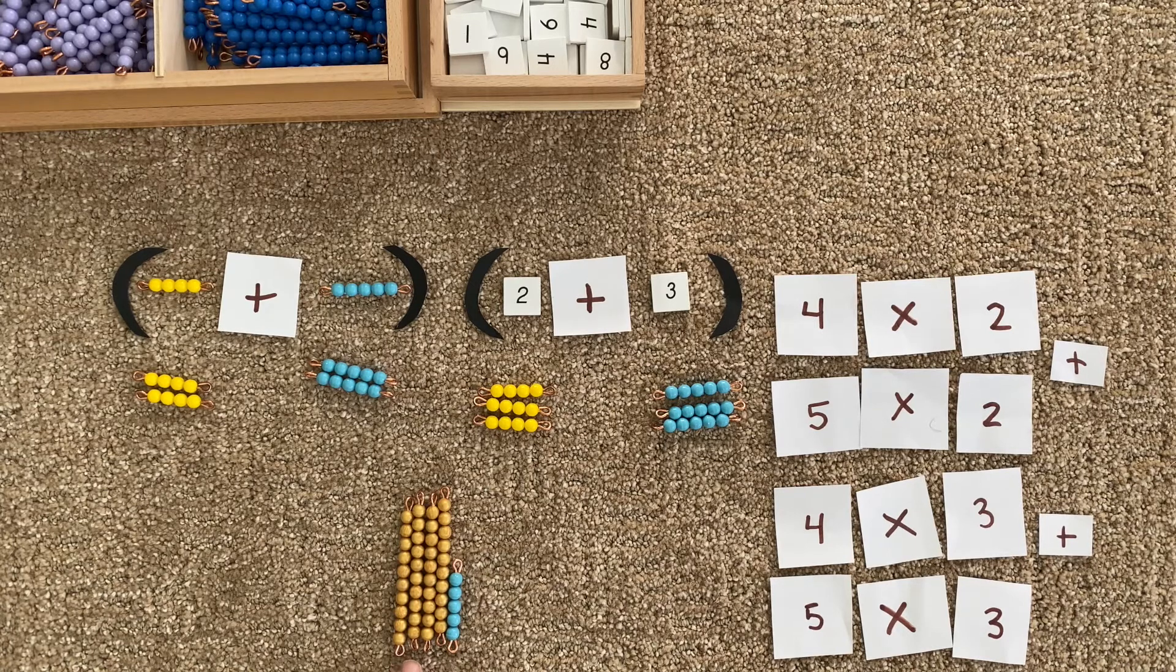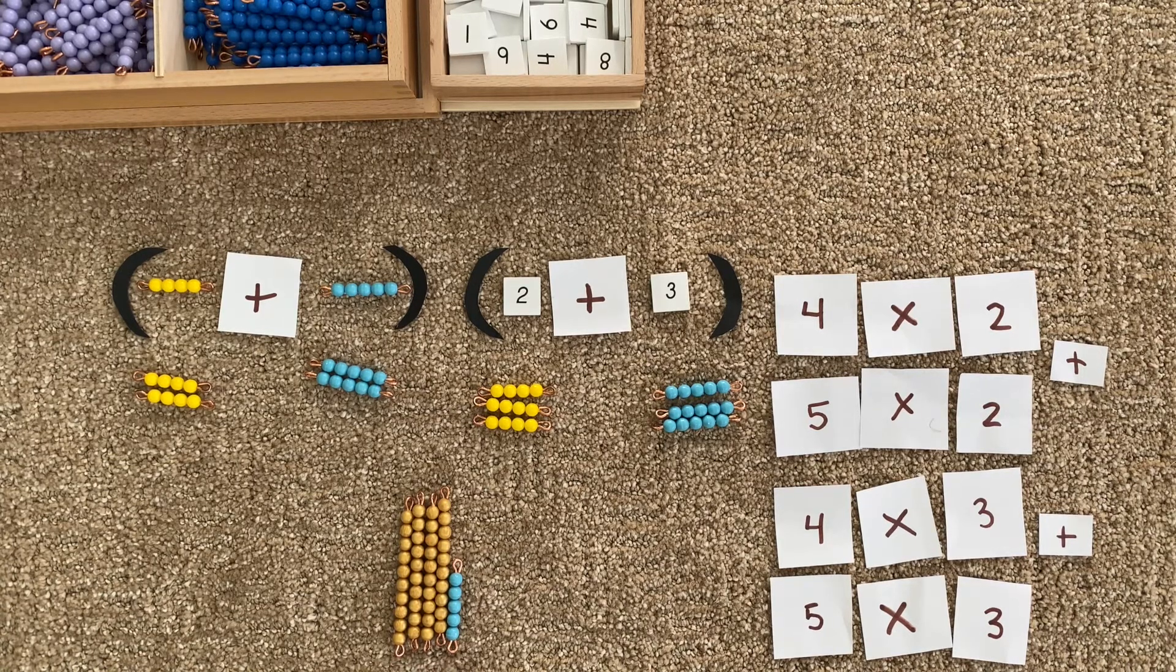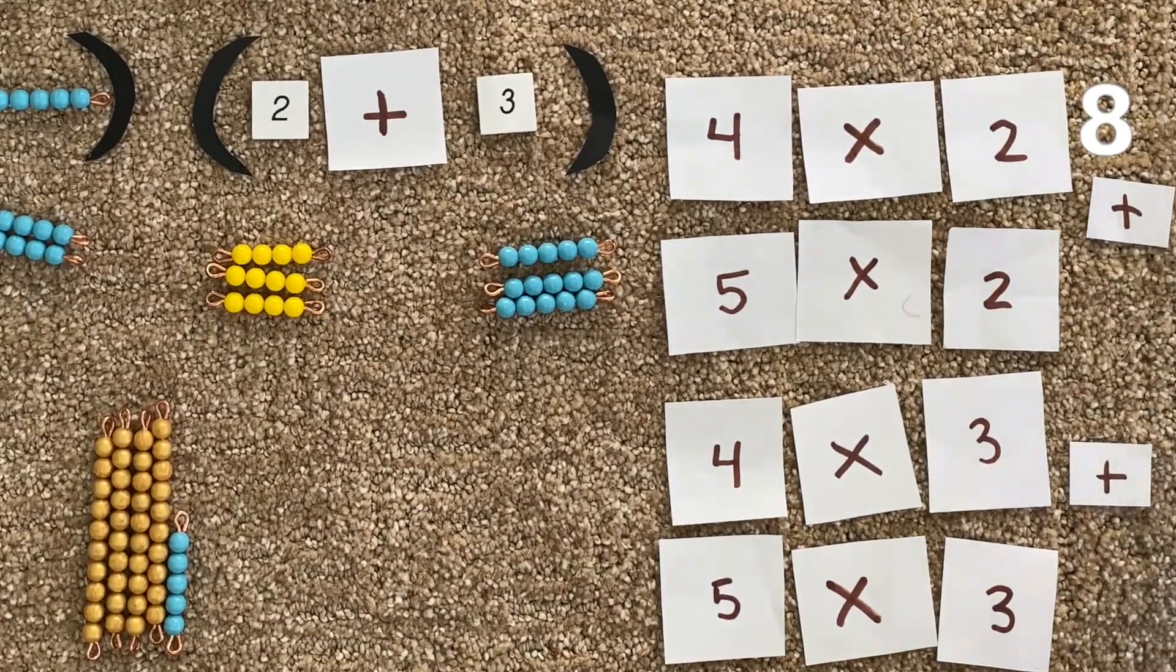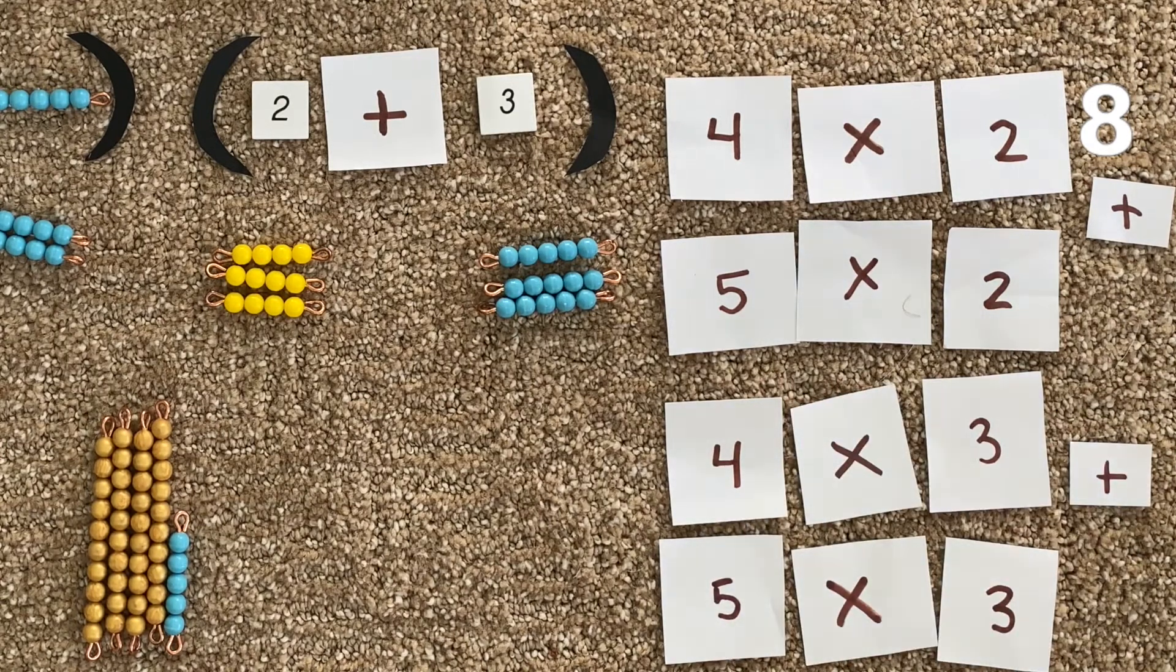Forty-five. Now let's go over here. What's four times two? Eight. What's five times two? Ten.